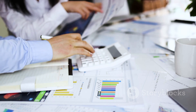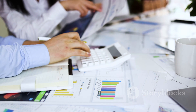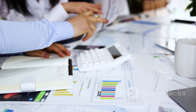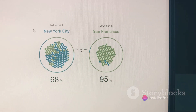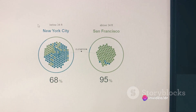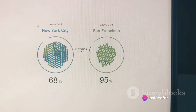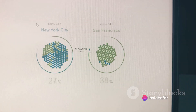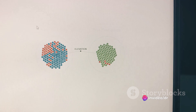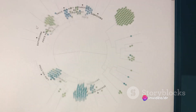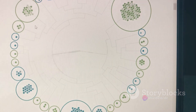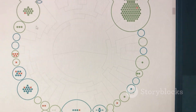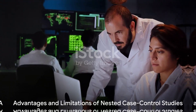Odds ratios are commonly used to measure the association between exposures and outcomes. Statistical methods such as conditional logistic regression are often employed to account for the matched case-control design.